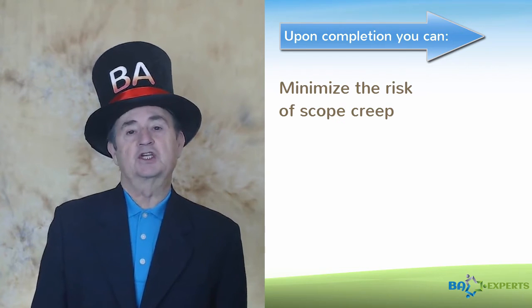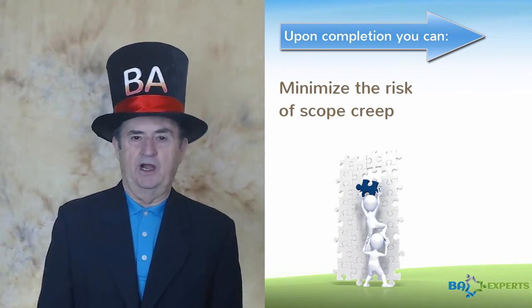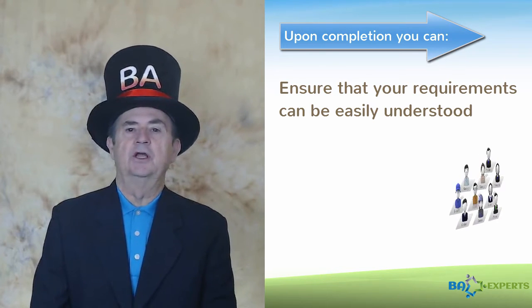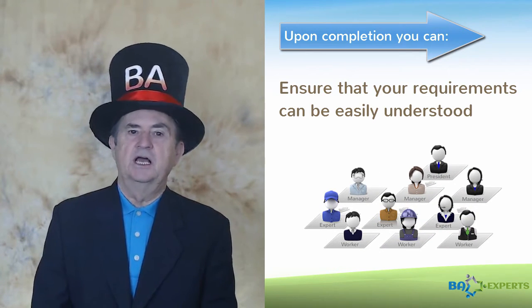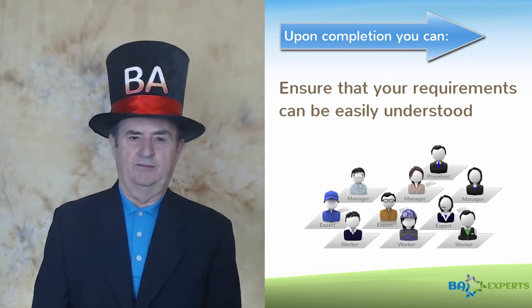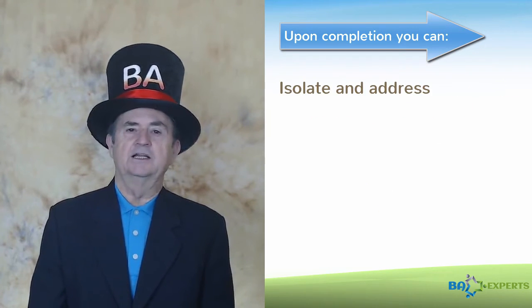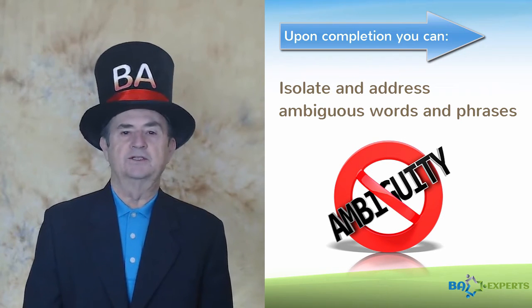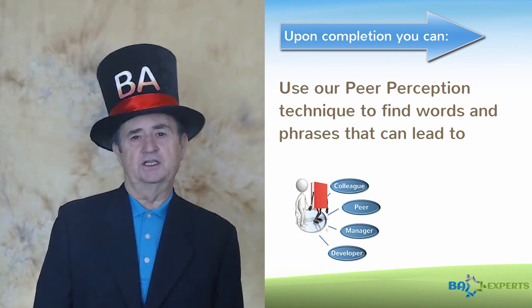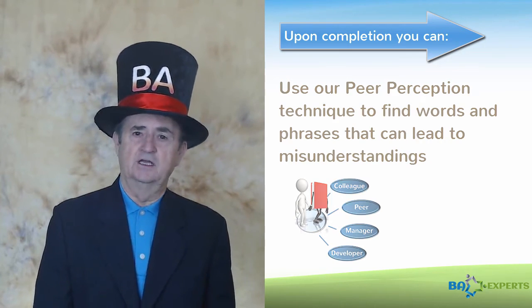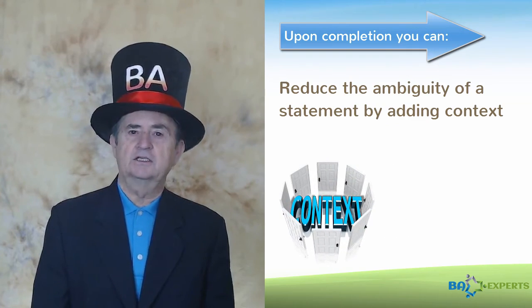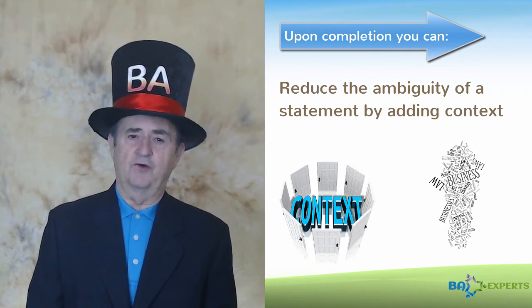Minimize the risk of scope creep caused by missed requirements. Ensure that your requirements can be easily understood by all target audiences and confirm that each audience shares a common understanding of the requirements. Isolate and address ambiguous words and phrases in requirements — use our pure perception technique to find words and phrases that can lead to misunderstandings. Reduce the ambiguity of a statement by adding context and using standard terms and phrases.